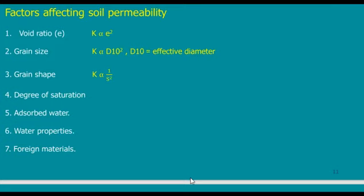There are several factors affecting soil permeability. First, void ratio — if soil has a high percentage of voids, water seeps through more easily. The permeability k is proportional to e squared, where e is the void ratio, meaning permeability is very strongly affected by void ratio. Second, grain size — larger particles generally mean more void space, so k is proportional to grain size.